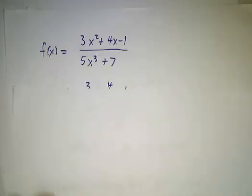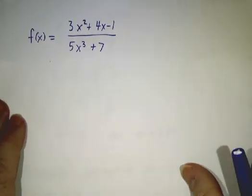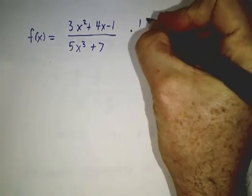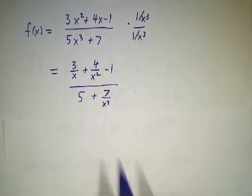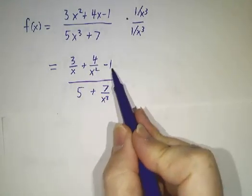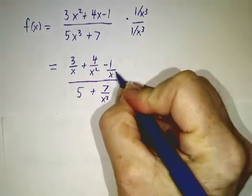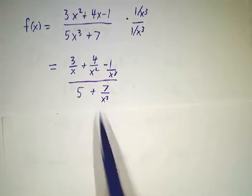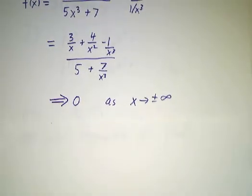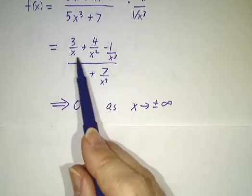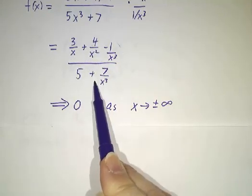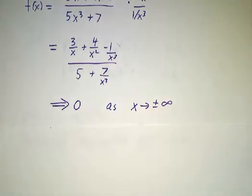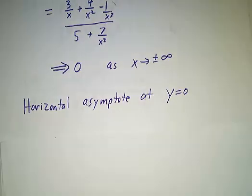Our last example has more powers downstairs than upstairs. So now we're going to divide by x³, and the numerator becomes 3 over x plus 4 over x² minus 1 over x³, divided by 5 plus 7 over x³. That goes to 0 on either end — whether x goes to infinity or minus infinity, the numerator goes to 0, the denominator goes to 5, and 0 divided by 5 is 0. So you have a horizontal asymptote at y equals 0.